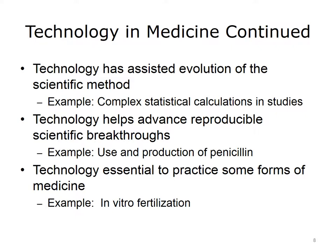For example, complex statistical calculations were once performed by hand, but now software packages such as SPSS are used extensively for the same tasks. Technology helps to advance reproducible scientific breakthroughs. After the discovery of penicillin, technology was key in refining its production and defining how it could be used.